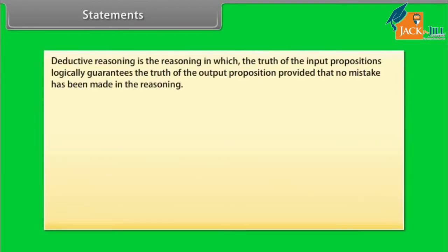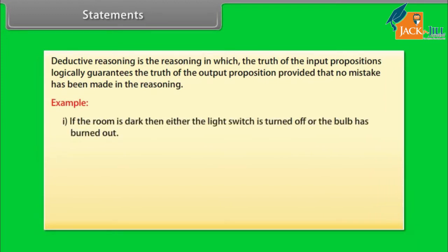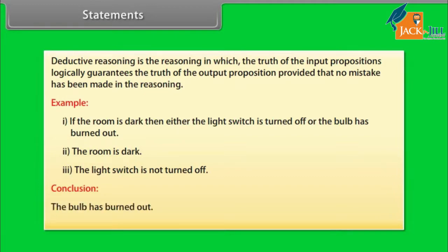Deductive reasoning is reasoning in which the truth of the input propositions logically guarantees the truth of the output proposition, provided that no mistake has been made in the reasoning. Example: (1) If the room is dark, then either the light switch is turned off or the bulb has burned out. (2) The room is dark. (3) The light switch is not turned off. Conclusion: the bulb has burned out.